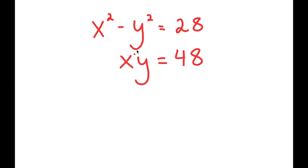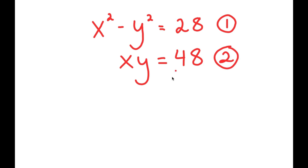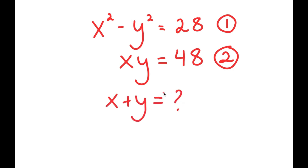In this system of equations, I have x squared minus y squared is equal to 28, and x times y equals 48. So I'm given two equations — equation one and equation two. What I want to do is find the value of x plus y.